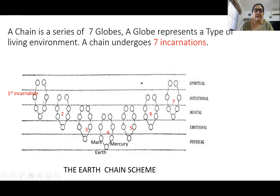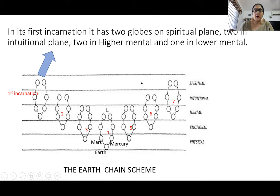Each planetary scheme has seven chains. We are part of Earth's planetary scheme — presently in the Earth chain, which has had three chains before it and will have three more after it. In these seven chains, evolution intends to bring man to his highest potential. In the first chain, the first two circles — called globes — are in the spiritual plane; the next two are in the intuitional plane; and the last three are in the mental plane, divided into higher and lower mental.